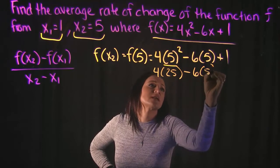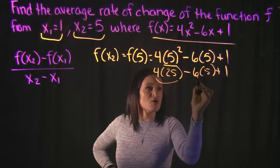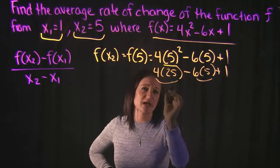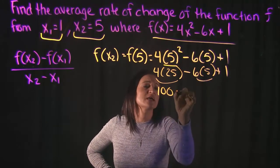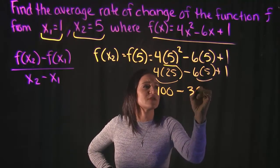Alright, then let's drop everything else down. Let's multiply before we add or subtract. So 4 times 25 is 100, minus 6 times 5 is 30.